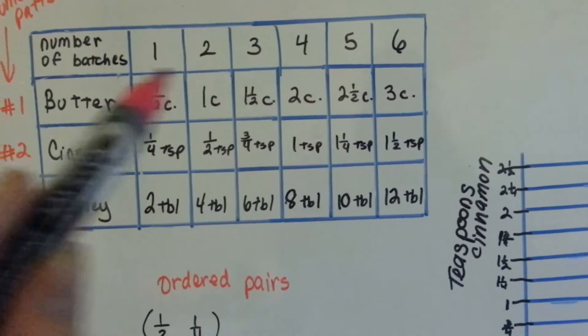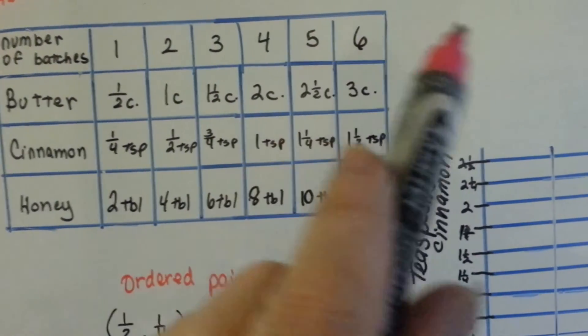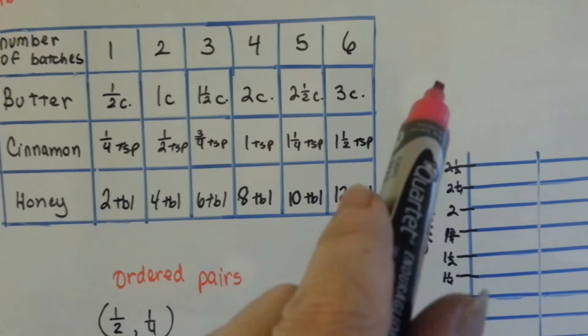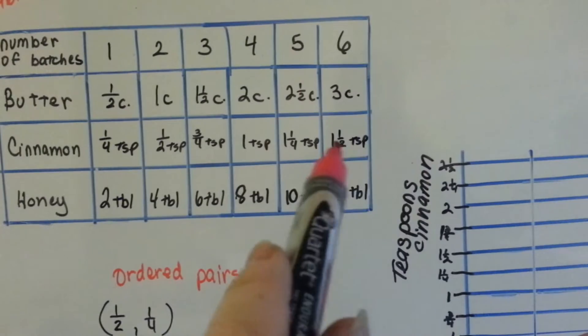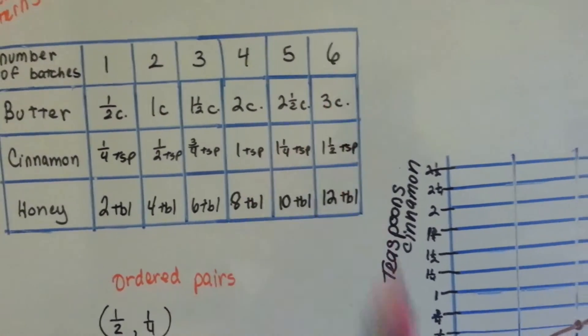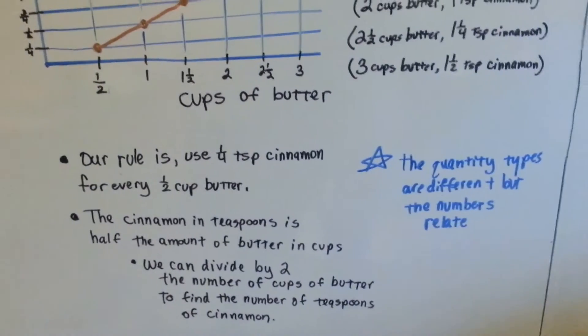So you would still be able to divide by two to find the next one. If it was four cups of butter, you'd be able to divide the four by two and know that you would need two teaspoons. The quantities are different, but the numbers relate.